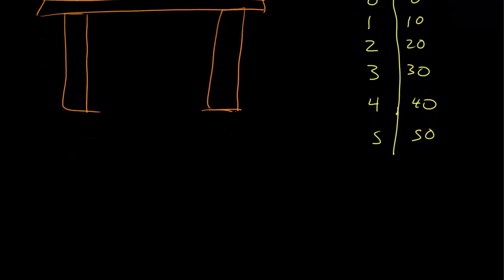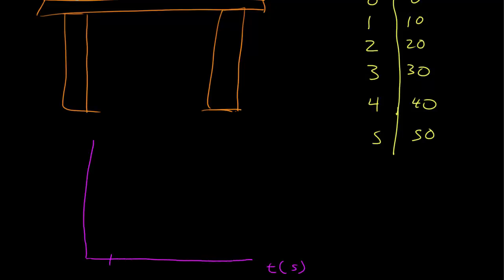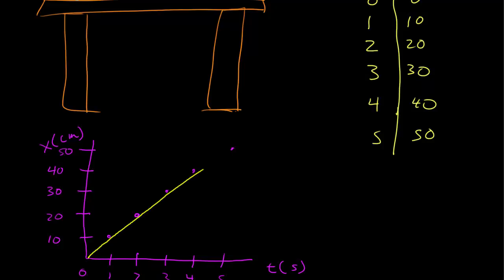And of course, what follows from a tabular representation is a graphical representation. I can have time on one axis in seconds and position on another axis in centimeters. I went ahead and graphed that — now I have that table of data as representative dots on a graph. I could draw a line through that graph that represents the motion during all periods of time, giving me a graphical representation of that event.